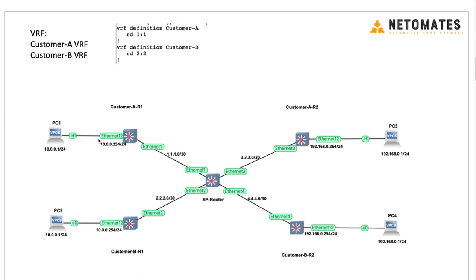Let's see how to configure and verify this. The first step is creating the VRF after entering configuration mode. We create VRFs for each customer. There is also an RD value we need to assign to each VRF — this should be unique between VRFs on the same router. Here I'm giving 1:1 for Customer A and 2:2 for Customer B. We won't go deep into RD values in this class.